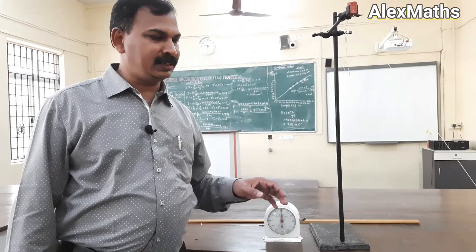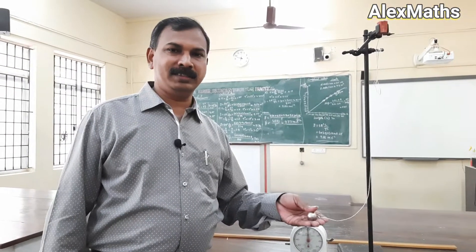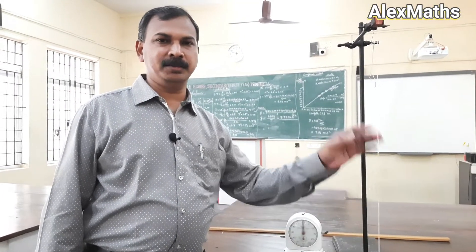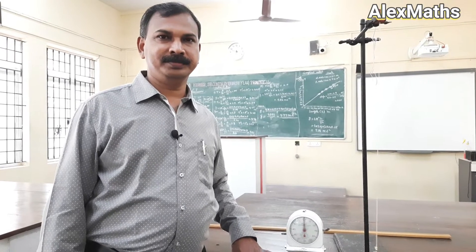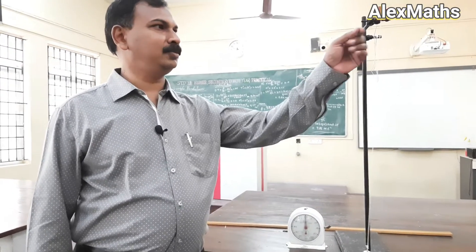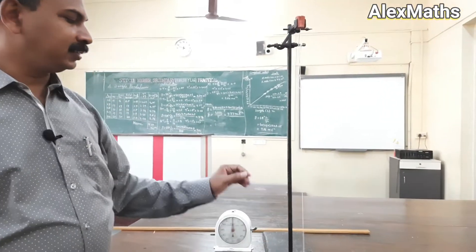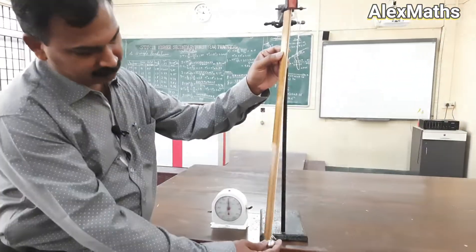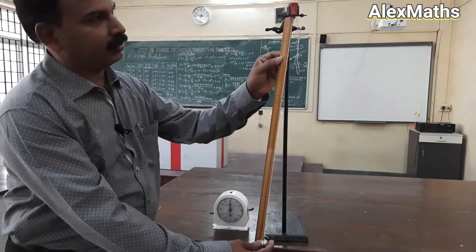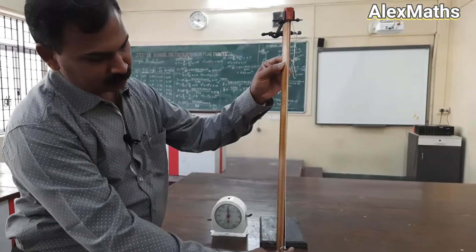Whatever the amplitude of oscillation or the weight of the bob, that does not matter here. Only the length of the pendulum as well as the time period matter. To start this experiment, I am going to set the length first — keeping the length of the pendulum as 60 centimeters, measured right from the torsionless head to the center of the bob.